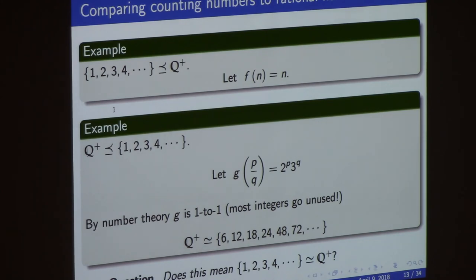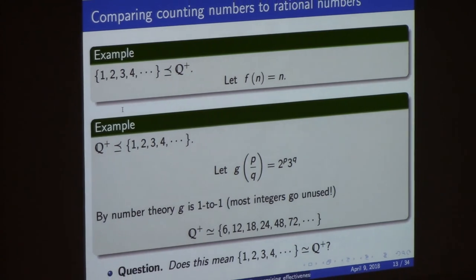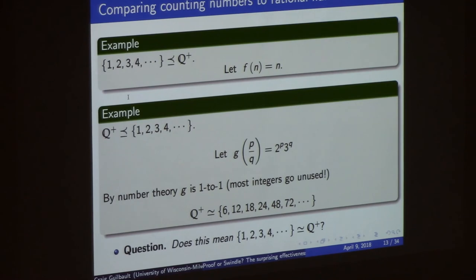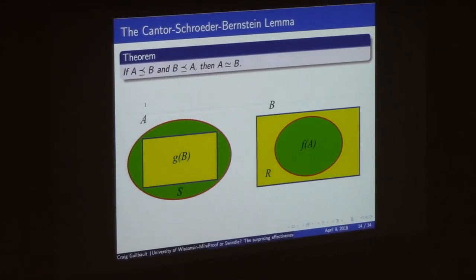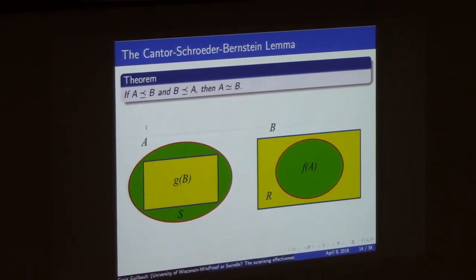So if the first set is less than or equal to the second, and the second is less than or equal to the first, does that mean they're the same size? That's not immediate — somehow our job becomes to take these approximate-type functions and turn them into an on-the-nose bijection between those two sets. That turns out to be a fairly deep fact. The theorem is: if set A ≤ B and B ≤ A, then they have to be the same. Cantor stated this is true but never bothered to prove it. Schroeder proved it but proved it wrong. Then Bernstein came along and got the proof right.